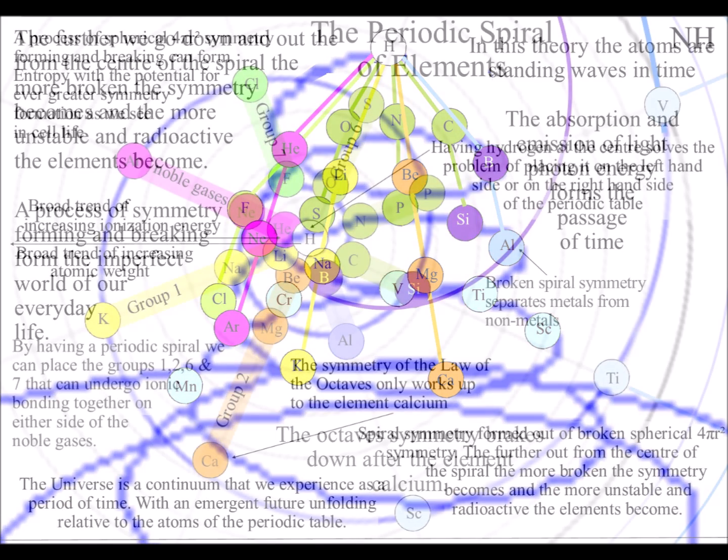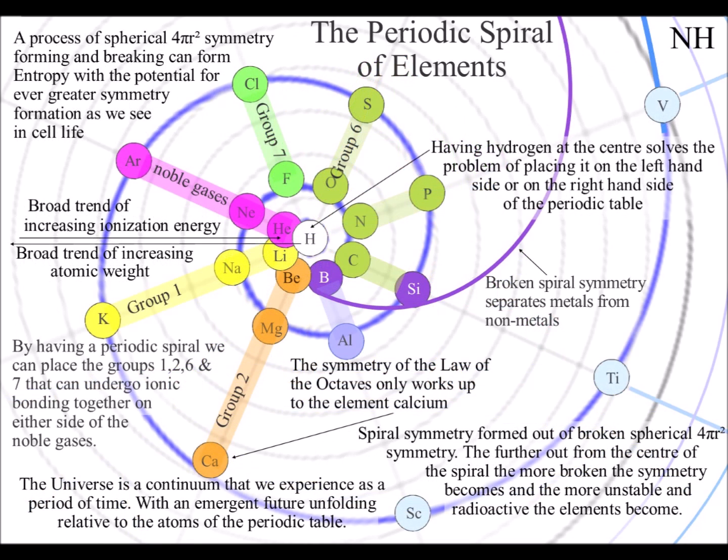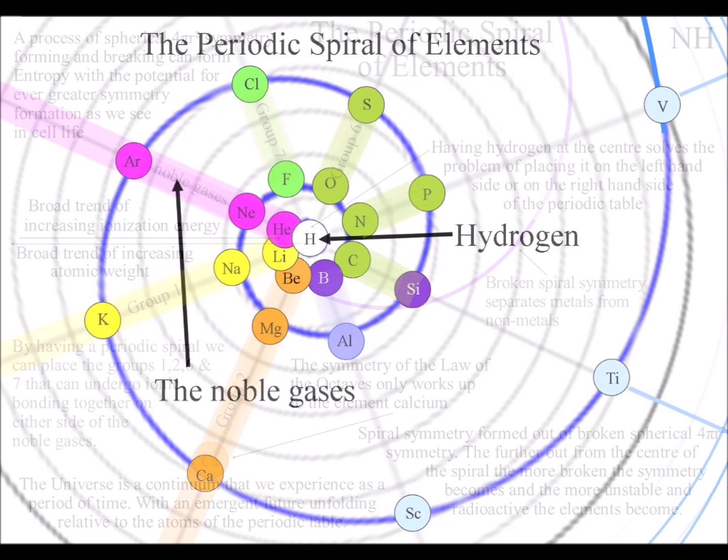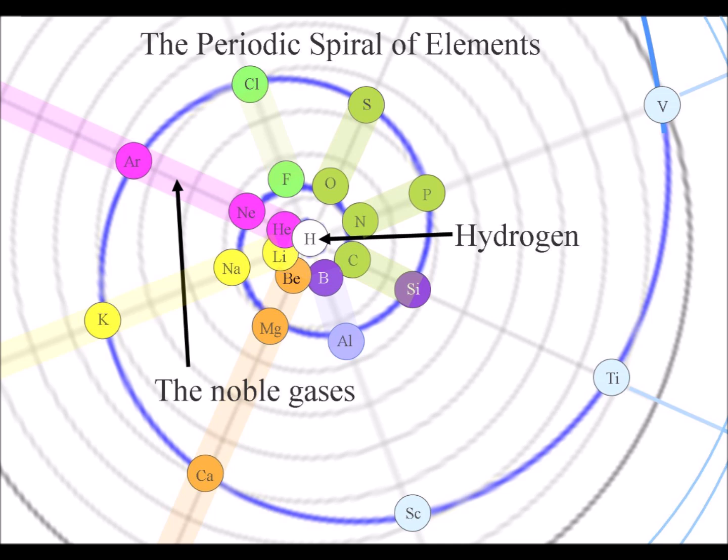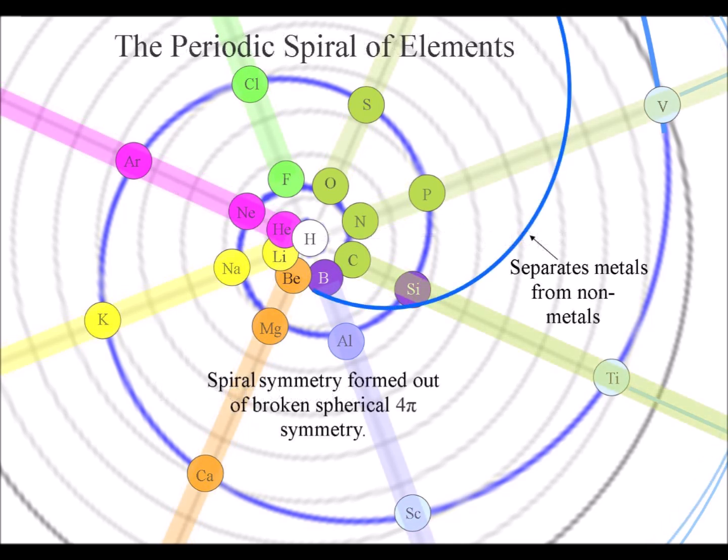If we look down on the spiral structure from above, it is easier to see that hydrogen is in the centre next to helium, with the noble gases and the other groups of elements radiating out like spokes from the centre of a wheel.